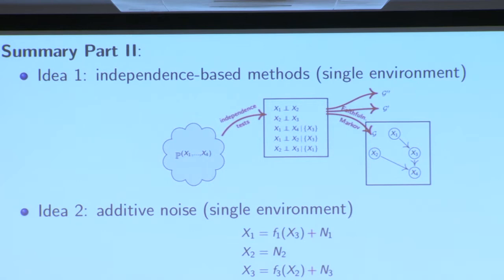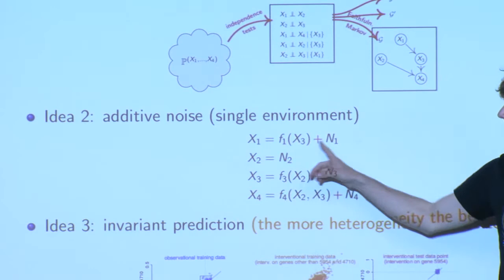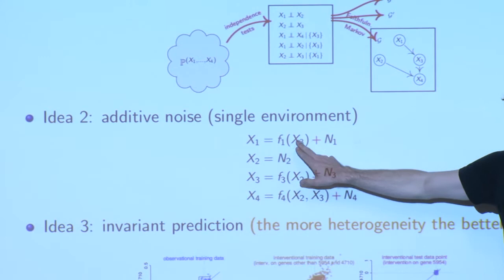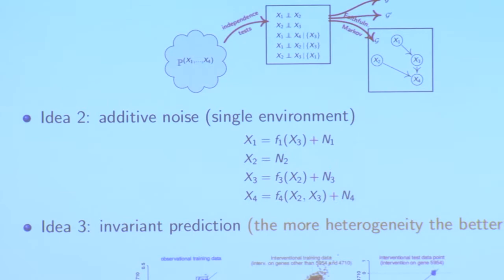The second idea was pointing at the structural causal models and saying, let's see what we can do if these structural assignments have an easy form. Each variable is a function of its parents and some noise. But if it has a simple form — in this case, additive noise — then it turned out we can actually also infer the causal structure from the joint distribution. Keep in mind, of course, there's a very strong assumption here.